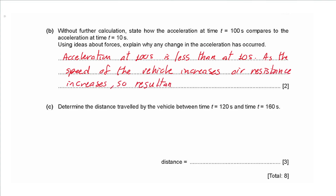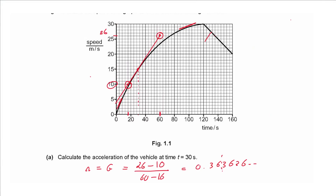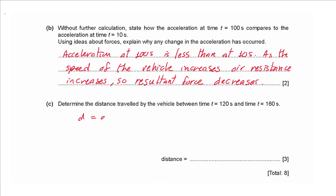Part c says determine the distance traveled by the vehicle between 120 seconds and 160 seconds. In a speed-time graph, distance equals the area under the graph. From 120 to 160 seconds that area is a trapezium: one base equals 20, the parallel base equals 30, and the height is 160 minus 120 = 40. Distance equals the average base (30 plus 20 over 2) multiplied by 40, giving 1000 meters, or 1.0 × 10³ meters.